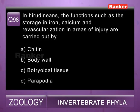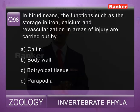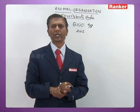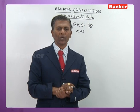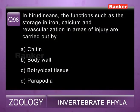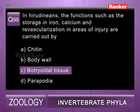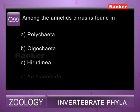Question ninety-eight: in Hirudinarians, functions such as storage of iron and calcium, and revascularization in areas of injury are carried out by — a) chitin, b) body wall, c) botryoidal tissue, d) parapodia. All these functions are carried out by botryoidal tissue, which replaces the body cavity in leeches. So ninety-eighth question correct answer is c) botryoidal tissue.